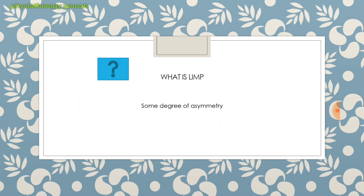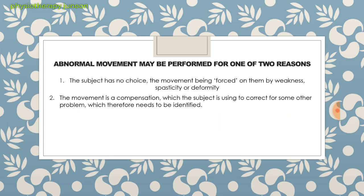Next, what is the limp? Because in pathological gait, this is a very important thing — limp. Limp is just some degree of asymmetry; we can call it a limp. Abnormal movement may be performed for one of two reasons: the subject has no choice, the movement being forced on them by weakness, spasticity, or deformity — like in most neurological cases — or the movement is a compensation, compensatory movement, which the subject is using to correct for some other problem, which therefore needs to be identified.